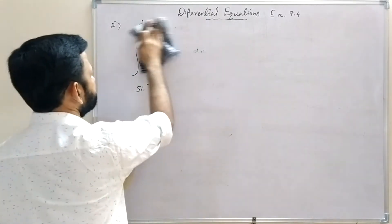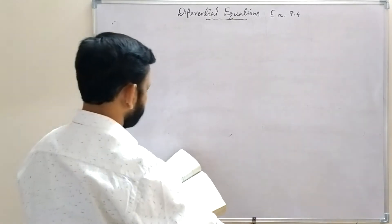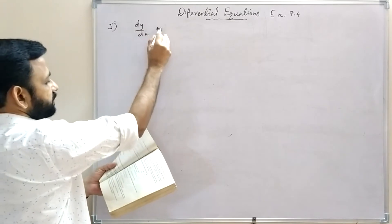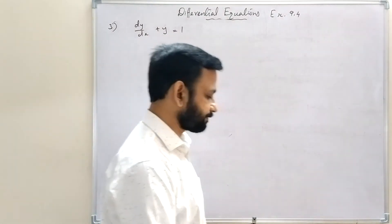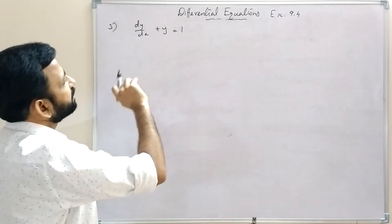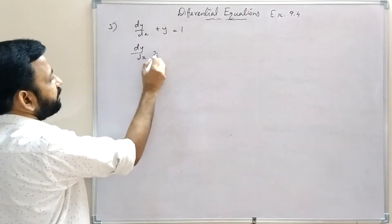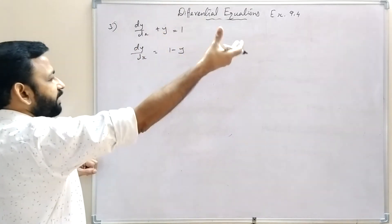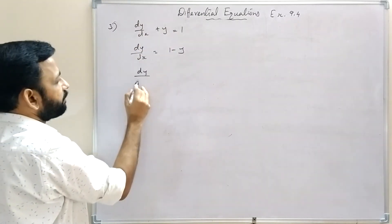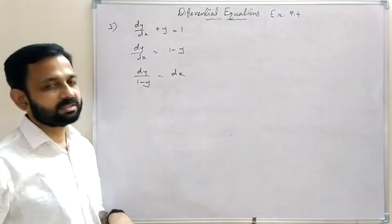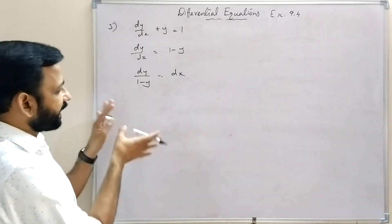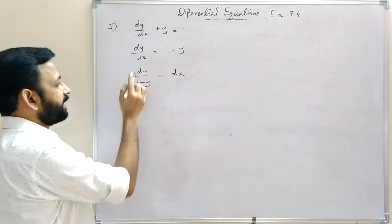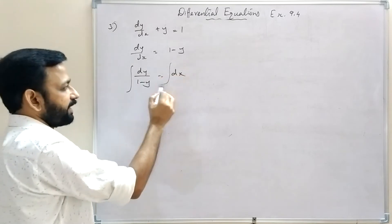Question 3: dy/dx + y = 1. Rearranging: dy/dx = 1 - y, so dy/(1 - y) = dx. Integrating both sides: integral dy/(1 - y) = integral dx.